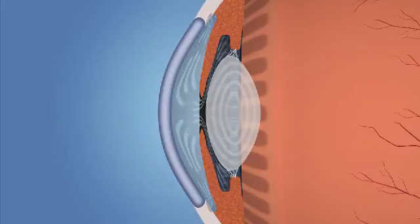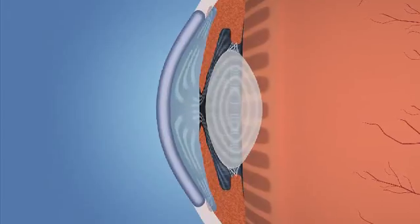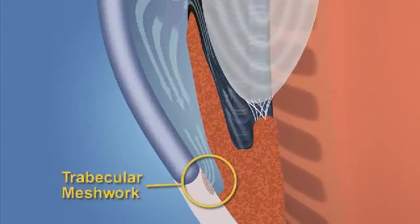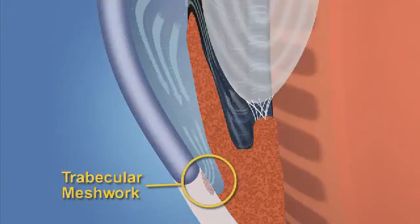To maintain a constant healthy eye pressure, your eye continually produces a small amount of aqueous humor, and an equal amount flows out through a microscopic drain called the trabecular meshwork in the drainage angle.